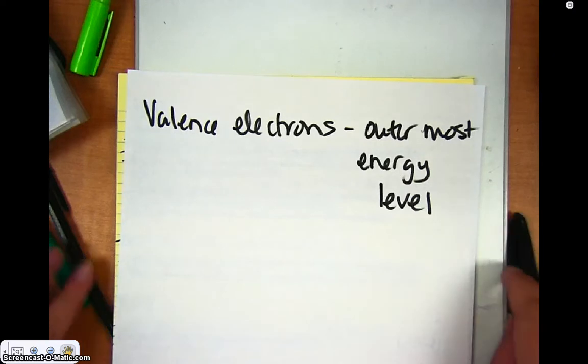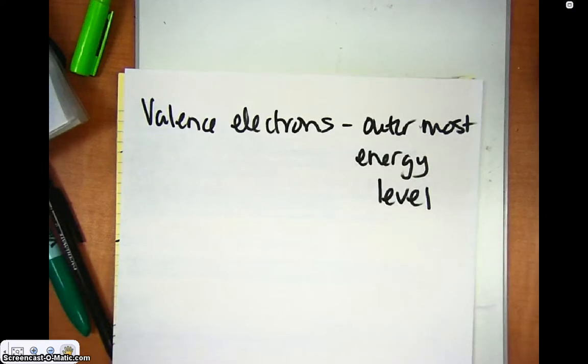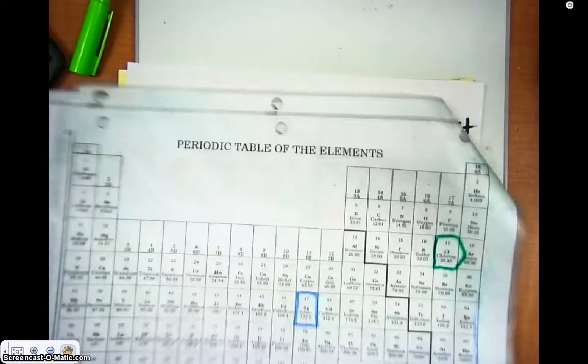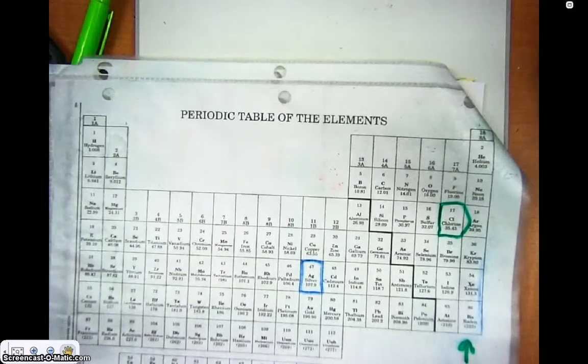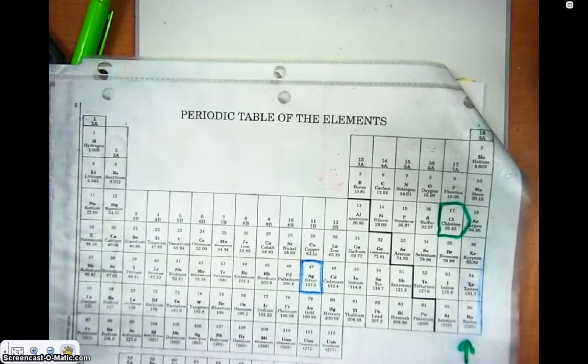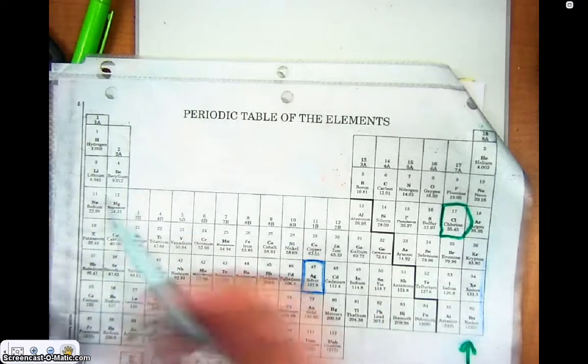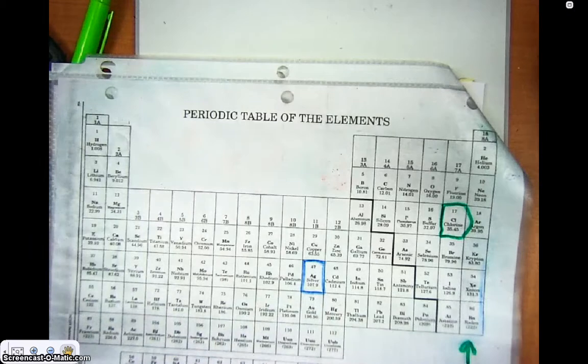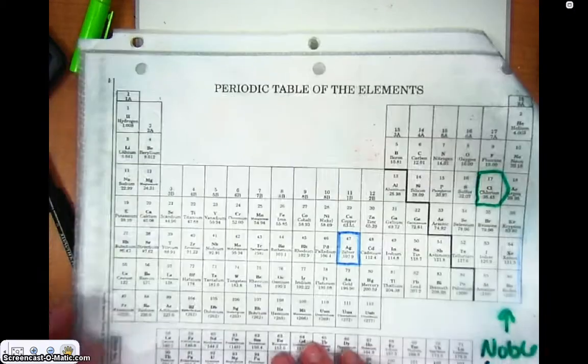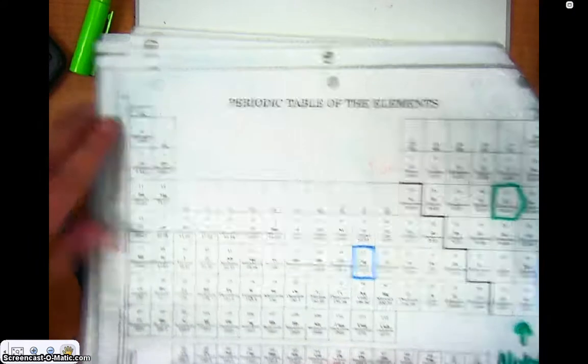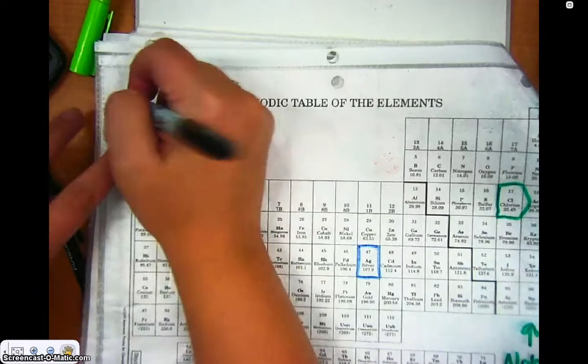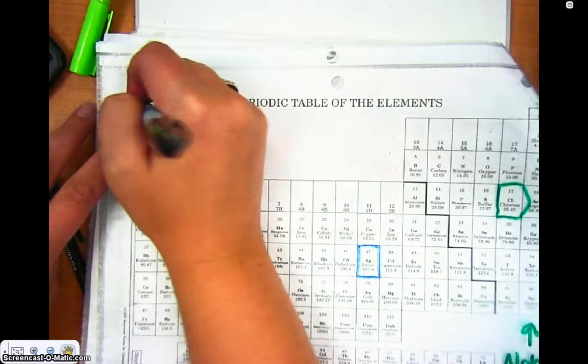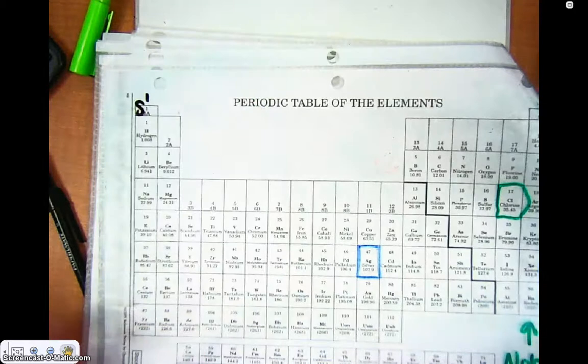Okay, so those valence or outer shell electrons are the most important. Now, if we look at the periodic table, we know that based on the columns or where they're located, we can figure out their electron configuration. And any atom that's in column 1 is going to have one electron in its outermost shell. So it's going to have an S1 electron be its outermost shell.